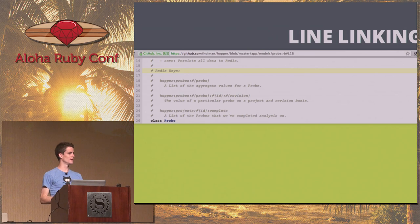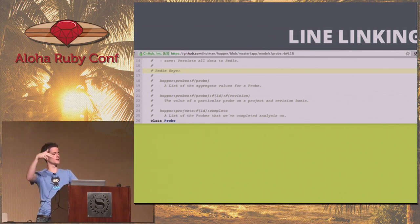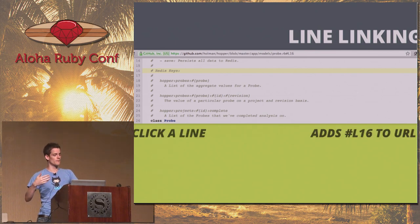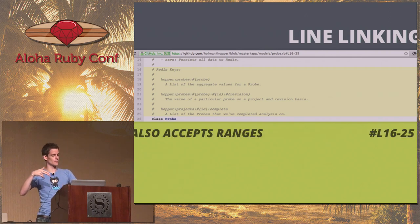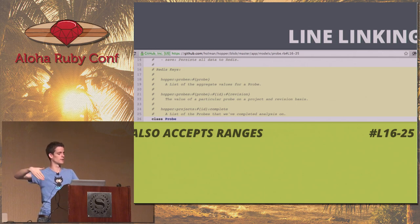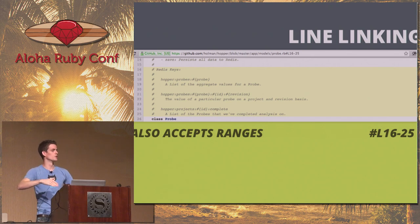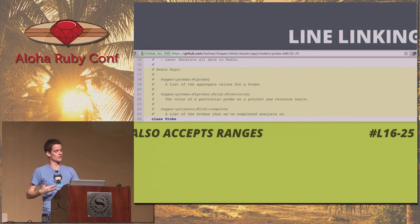Line linking — if you click on a line, it highlights that line and adds it to the URL so you can pass it around. What you may not know: you can also do ranges. Add a dash and the ending point — for example, #L16-25 — and we'll highlight that whole block in GitHub. A nice way to pass around code.